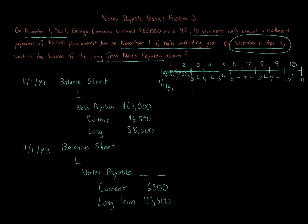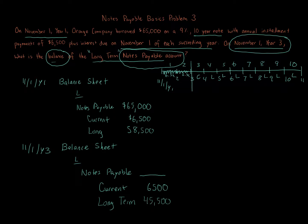Now here's the key distinction. You might think $45,500 is the answer since it's the long-term portion — but this question asks for the balance of the long-term notes payable account. It says 'long-term,' but it doesn't say 'long-term portion.' This is a long-term notes payable account because the note matures long-term — on November 1st, Year 11 — so it's classified as long-term in general.